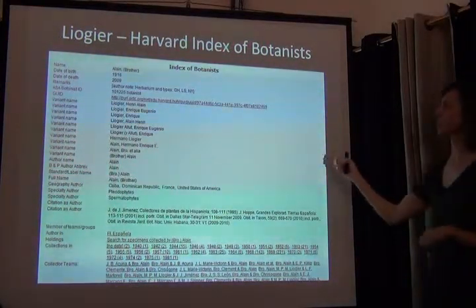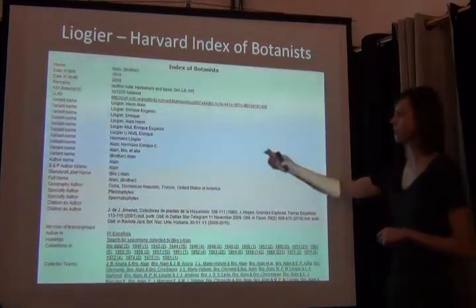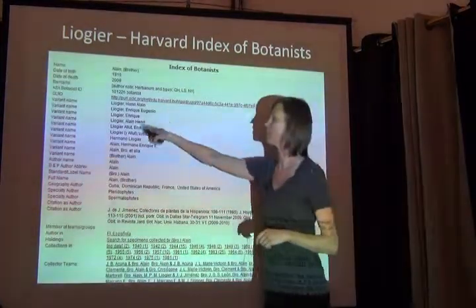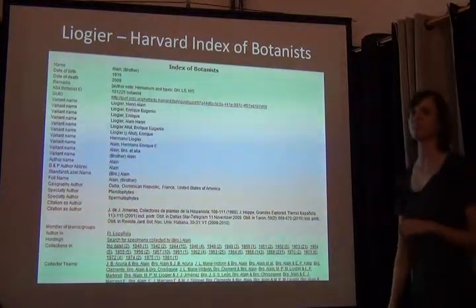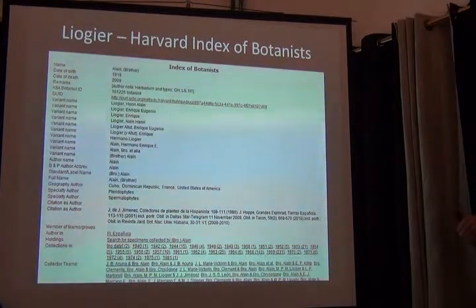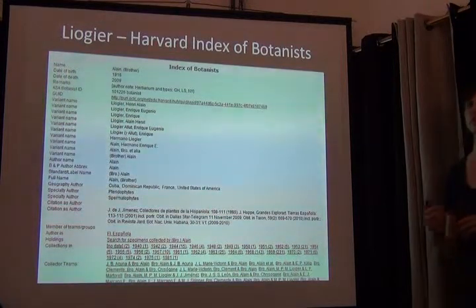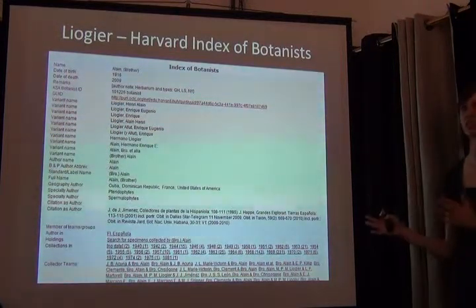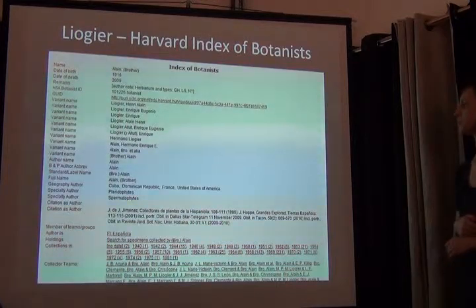This is the record from the Harvard Index of Botanists. You can see there are ten different name variants here. So if you're looking at labels, it would be very hard — if you're looking for all of his collections, you'd have to look up every single variant unless you've standardized your data in order to find all of his collections. So it's very important as you're entering data to have this as a lookup list up front.